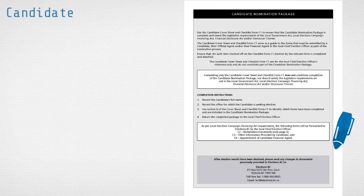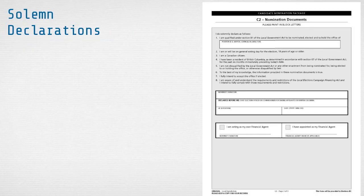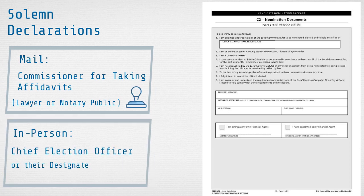Candidate nomination packages are generally available from your local government a few weeks before the nomination period, which starts on September 4th. Nomination packages include a number of solemn declarations you are required to make. To mail in nomination packages, you can make the solemn declarations with a commissioner for taking affidavits, or you can submit your package in person and make the declarations with the CEO or their designate.